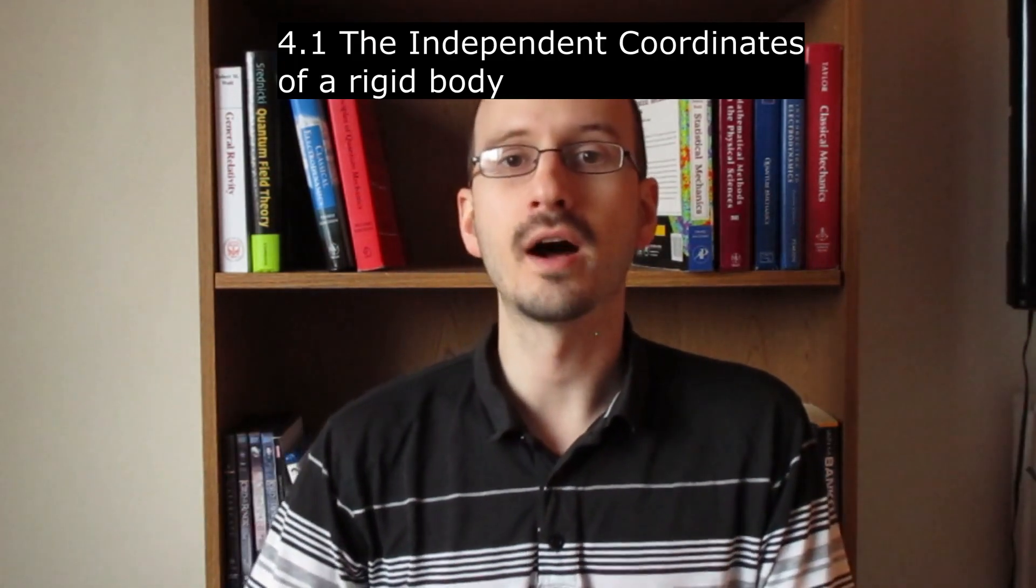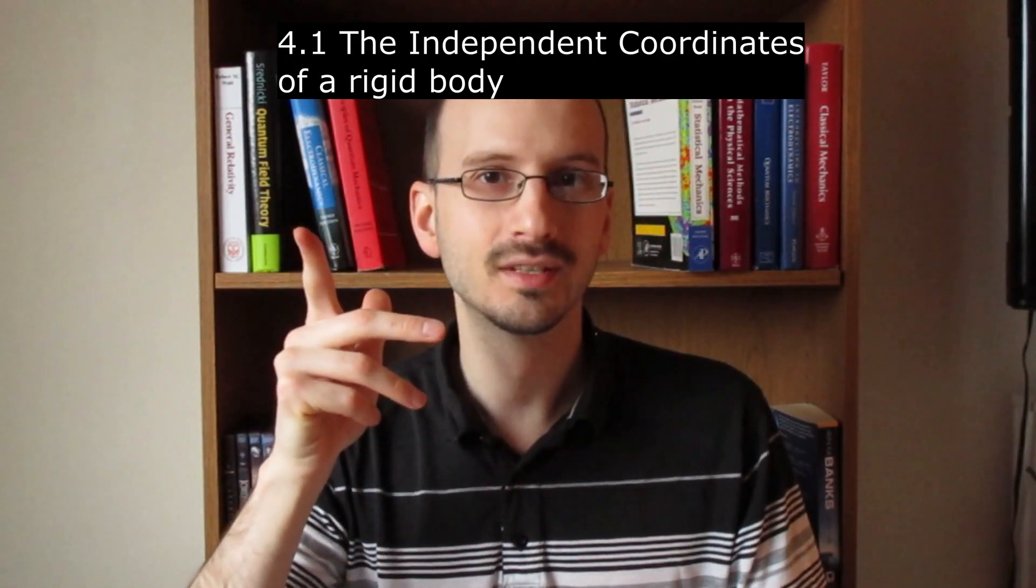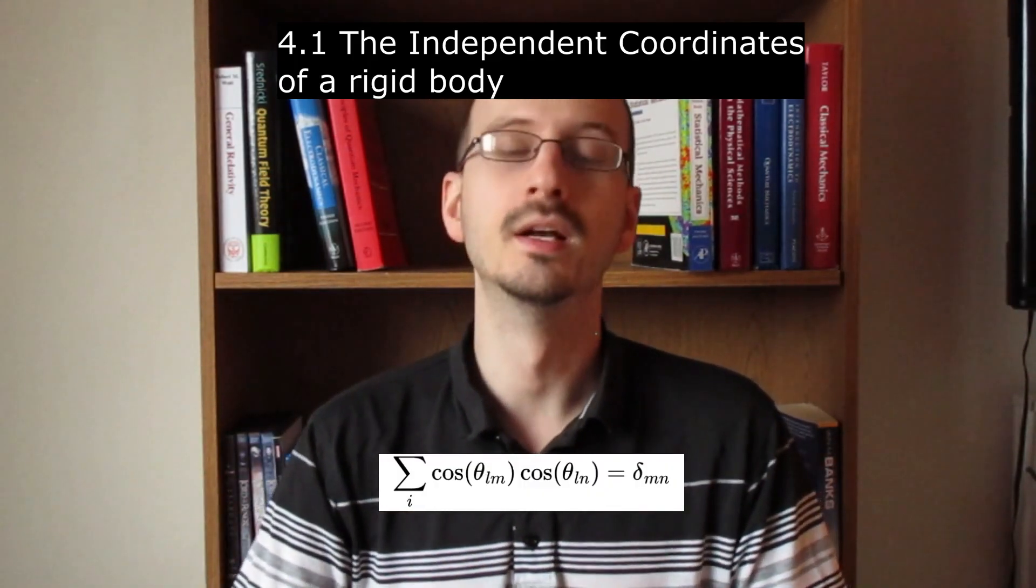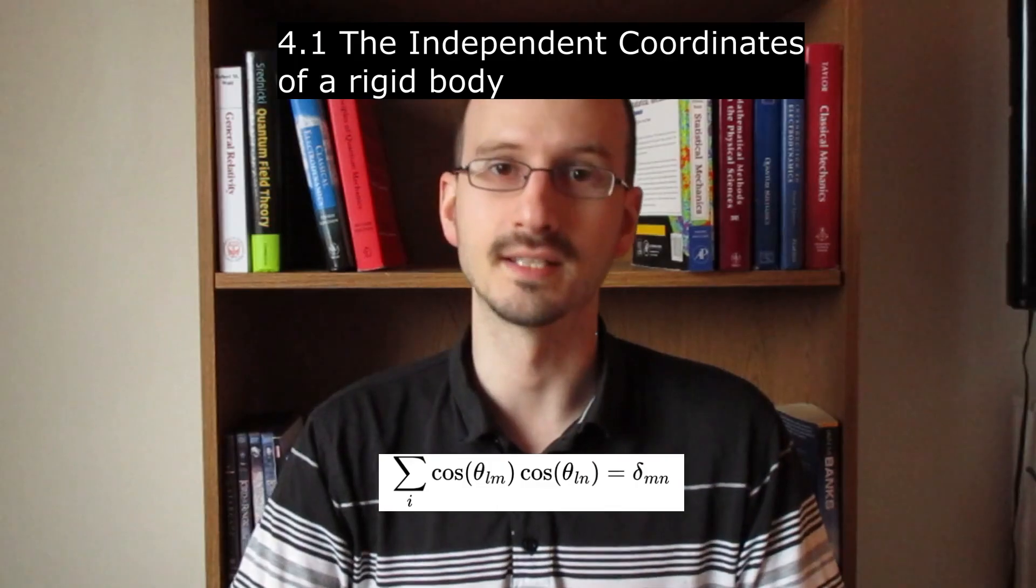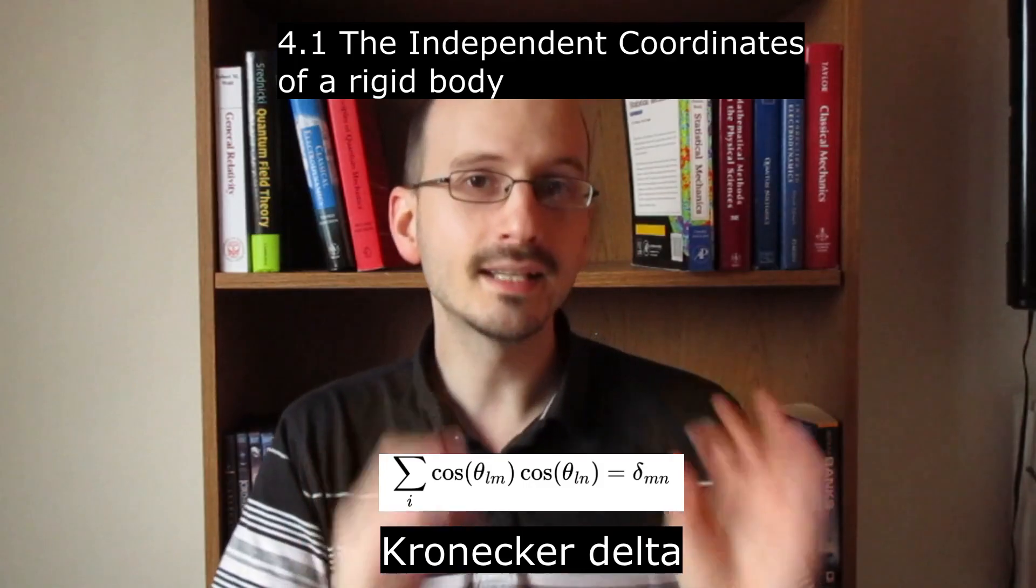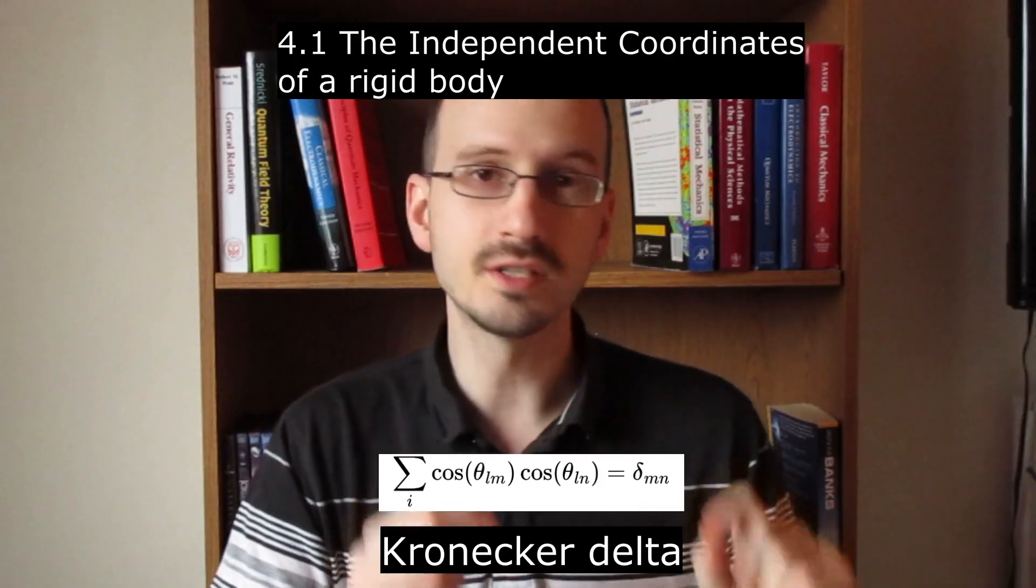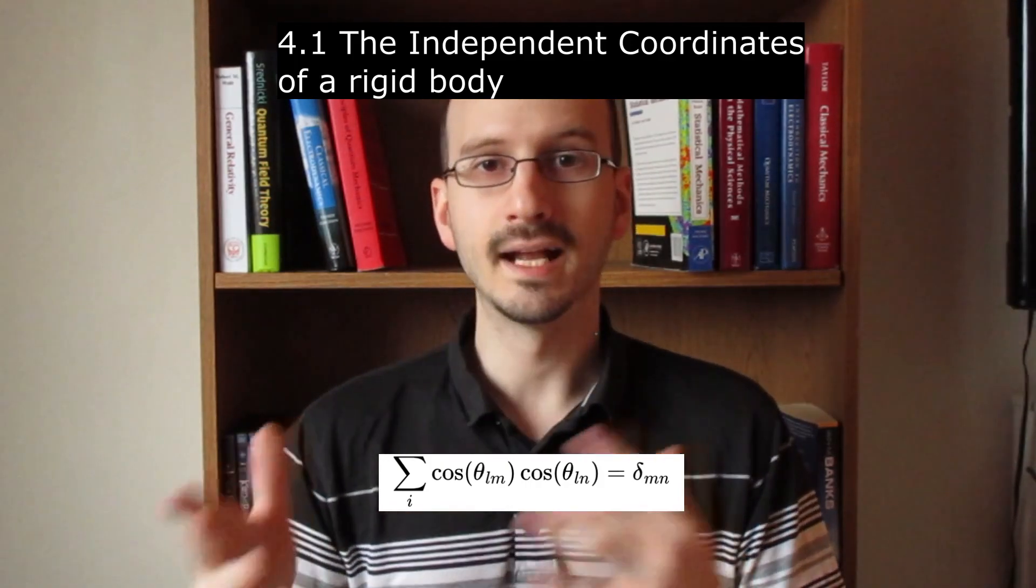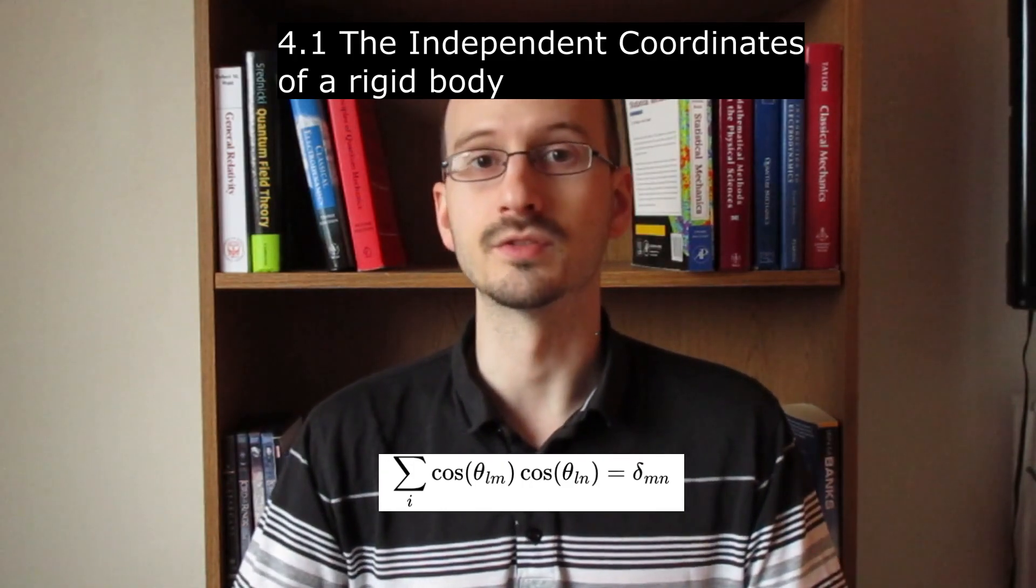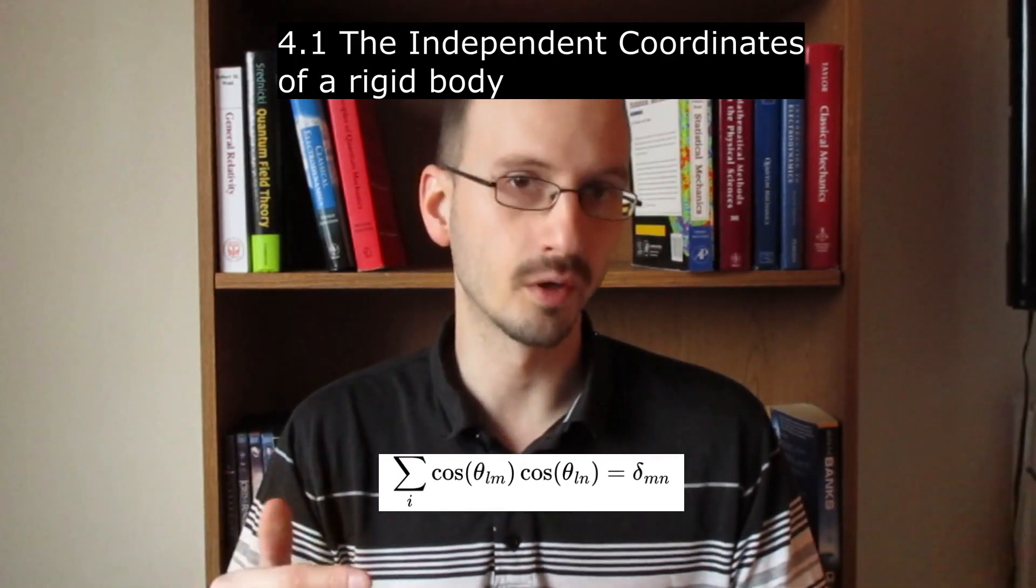Well, the axes are orthogonal, which means between the XYZ there are 90 degree angles. This can be accounted for by using this equation, which is a summation of multiplying the cosines together. And that symbol that it equals is the Kronecker delta. If the indices and the delta are the same, it equals one. But if those indices are different, it equals zero. And this gives us enough constraints to limit the number of independent variables to three, which we won't label yet. But we will when we get to the section on Euler angles.